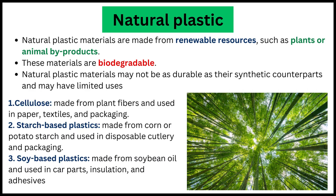Examples of natural plastic materials are cellulose, starch-based plastic, and soy-based plastic. Cellulose is made from plant fiber and is used in paper, textiles, and packaging. Starch-based plastics are made from corn or potato starch and are used in disposable cutlery and packaging. Soy-based plastics are made from soybean oil and used in car parts, insulation, and other applications.